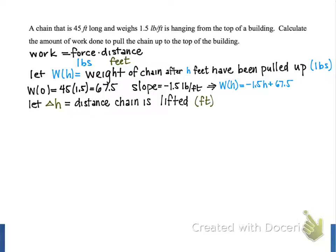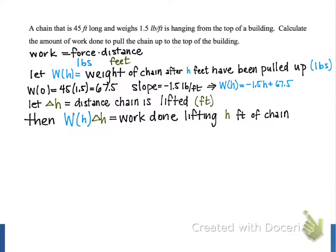So then w(h) is multiplied by Δh. If we multiply these two quantities together, this represents the work done by lifting that h feet of chain just a small distance of Δh feet, and we can just multiply that together using our product there.